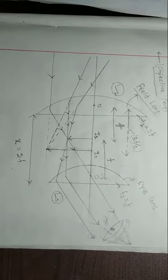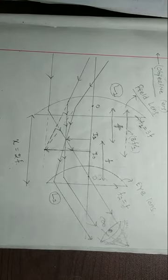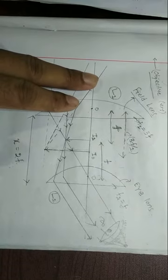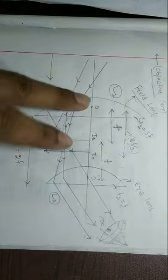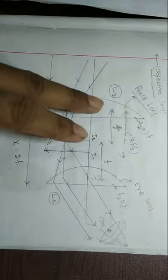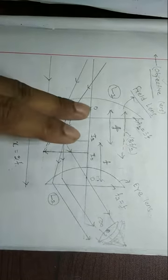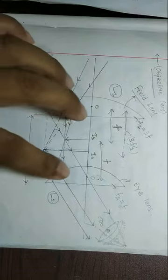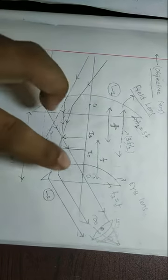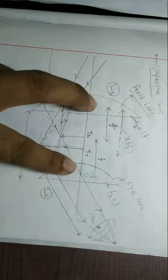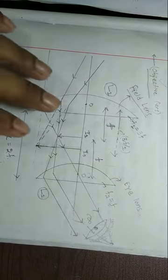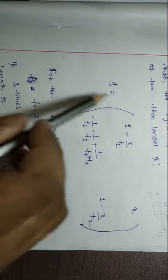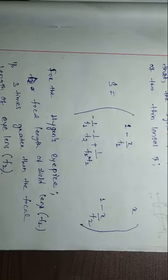In the case of Huygens' eyepiece, the same situation applies — two plano-convex lenses are placed separated by a distance. This system of two thin lenses separated by a distance can be represented with the help of the generalized system matrix.